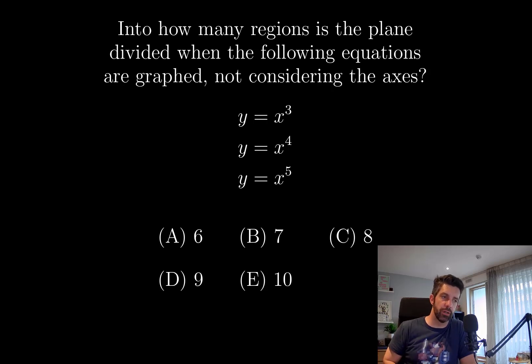The intersections of these curves are very simple. They're all going to be 0, 1, or negative 1 if there are intersections at all.